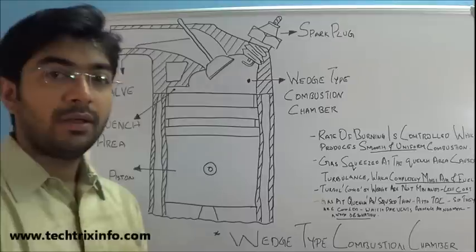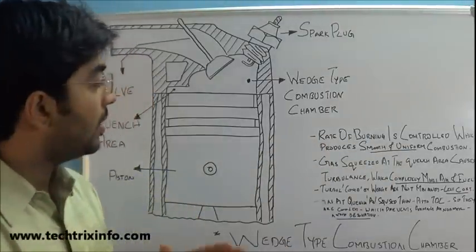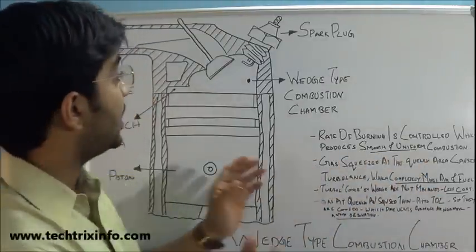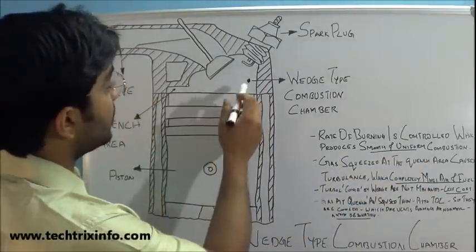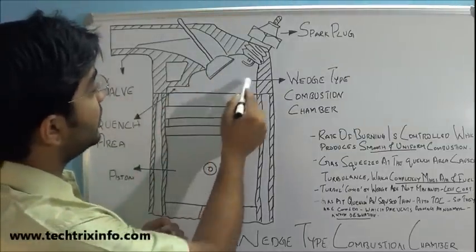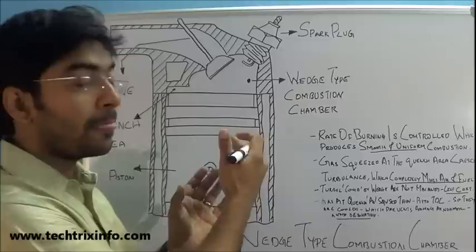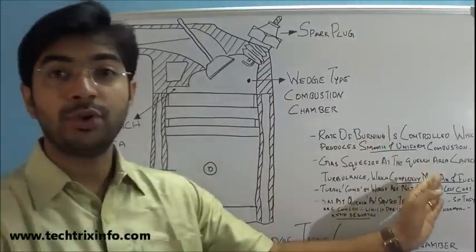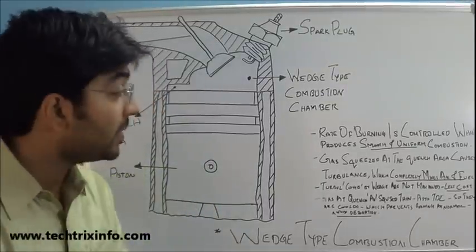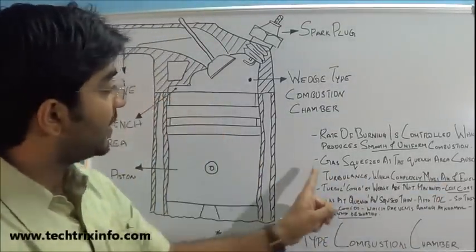This is the quench area — you can see a small area over here. How is smooth and uniform combustion achieved? The rate of burning is controlled, which produces the smooth and uniform combustion in a wet state combustion chamber. The rate of burning is controlled due to this shape of the wet state combustion chamber.